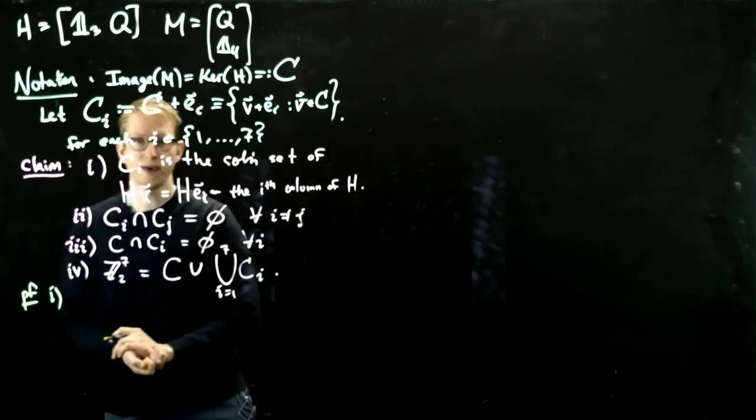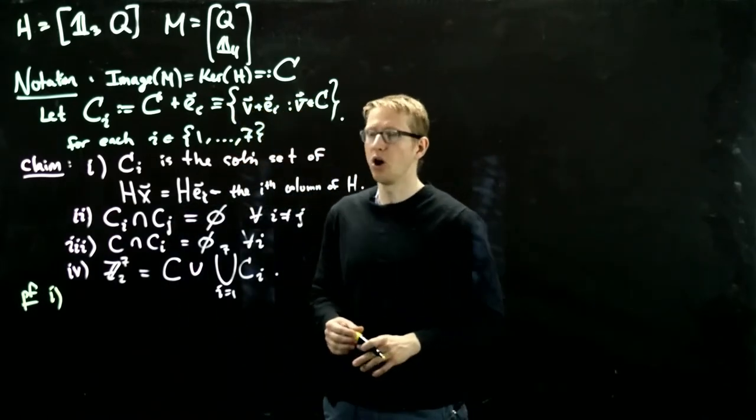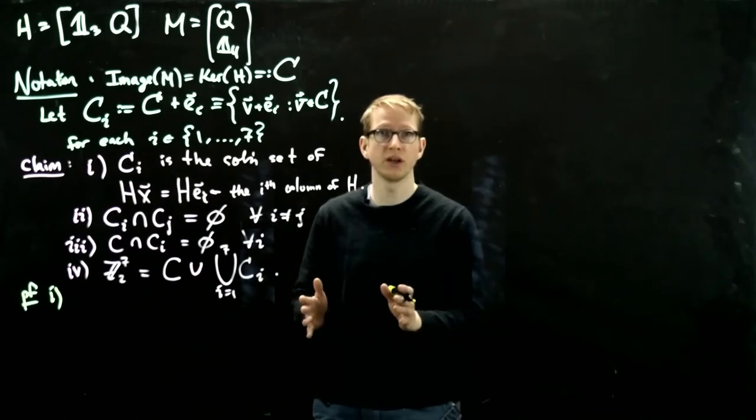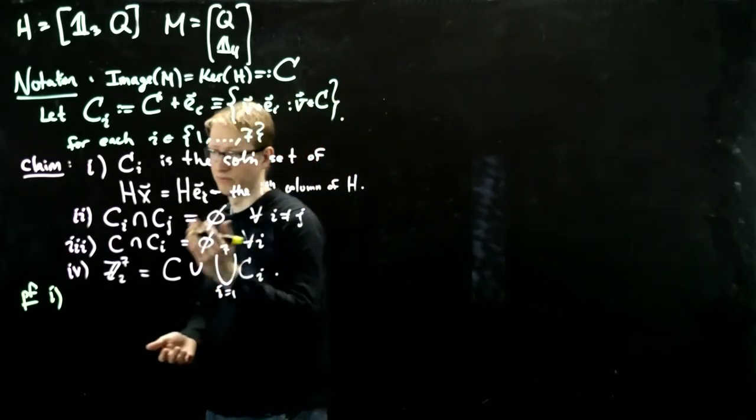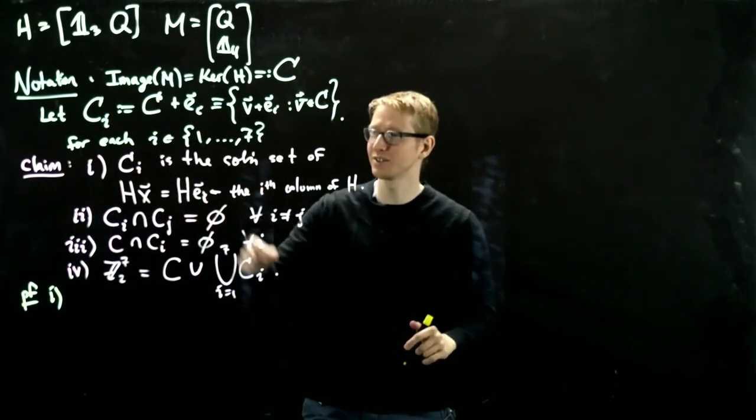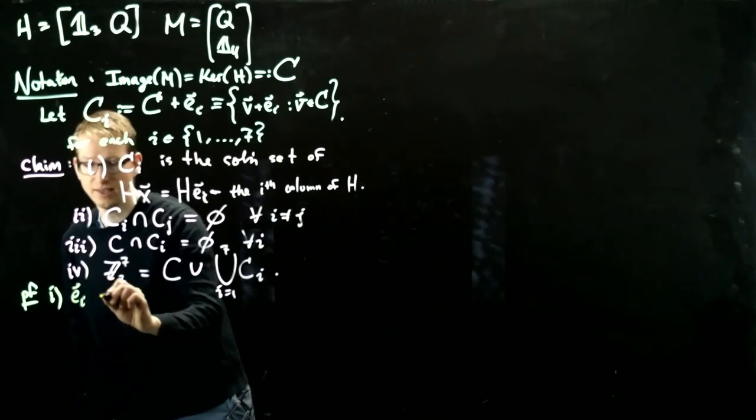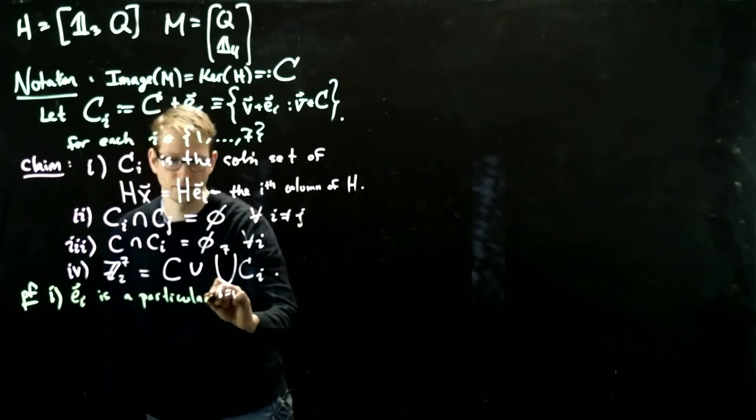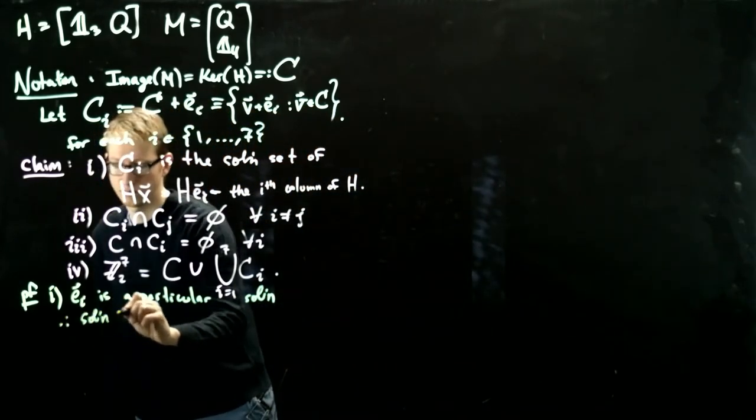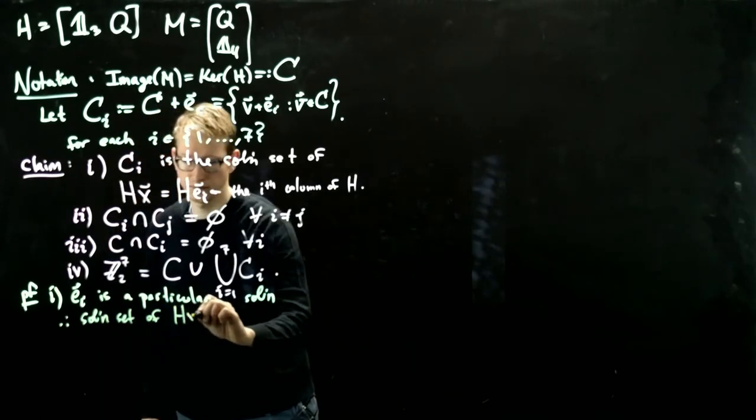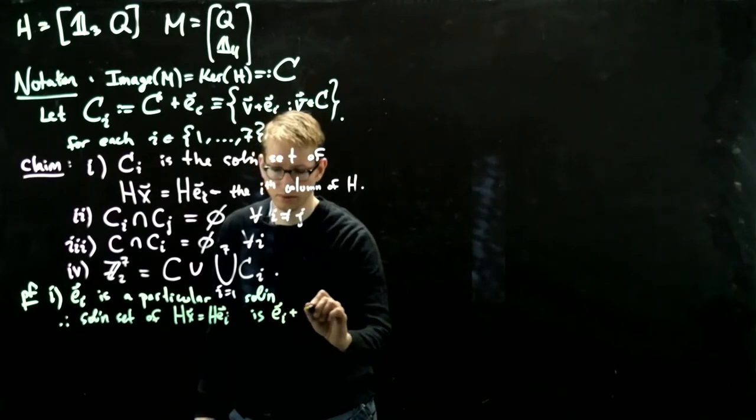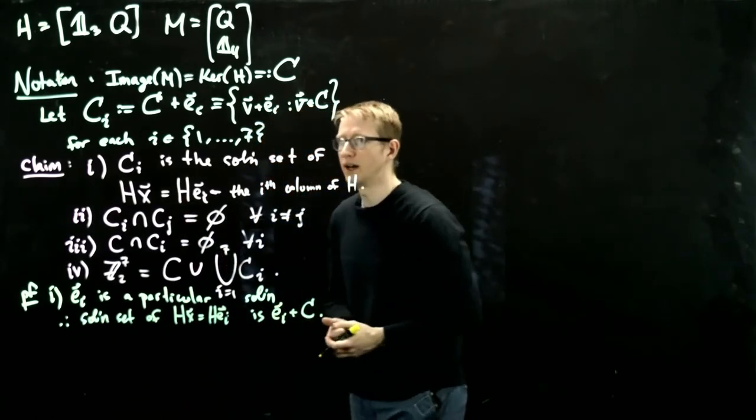So the first claim. Now when we solve inhomogeneous systems, all we have to do is find one particular solution. And if we find that a solution exists, then the solution set of the inhomogeneous system is that particular solution plus the homogeneous solution that we obtained from solving for the kernel of H. So notice that we can just take X to be E_i to get a solution set. E_i is a particular solution. And therefore, the solution set of the whole system of HX equals HE_i is that particular solution plus the homogeneous one. And that's exactly what the claim is.